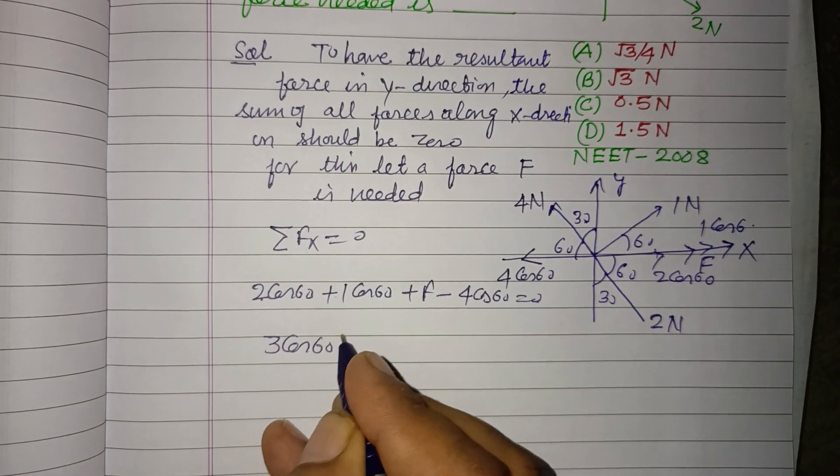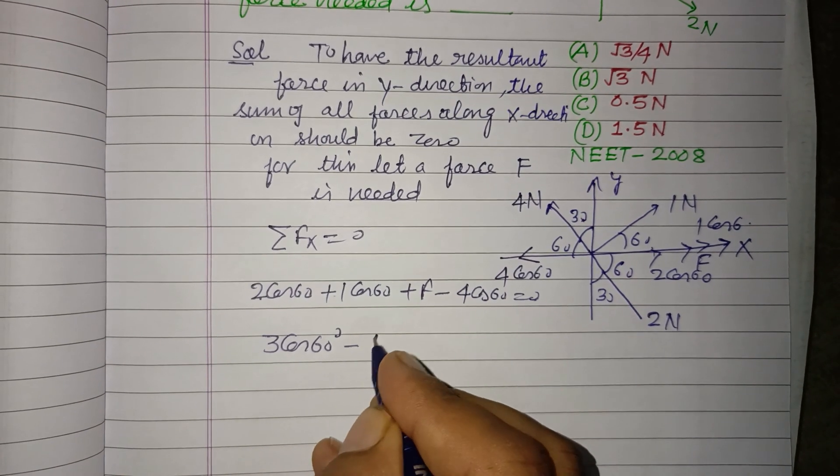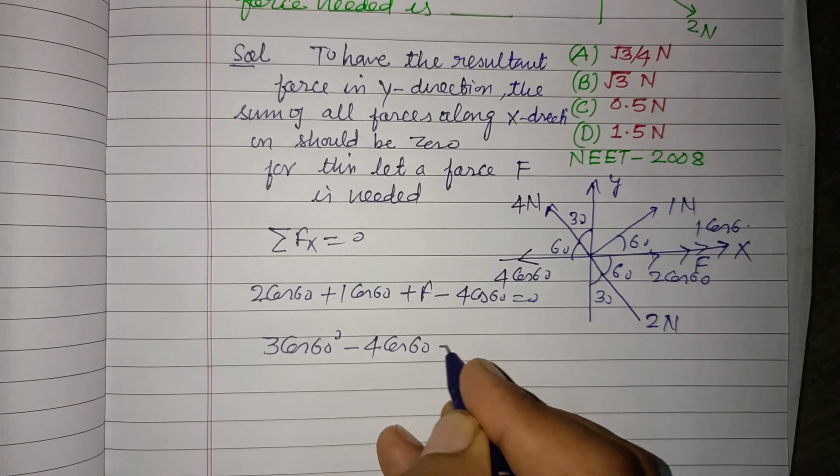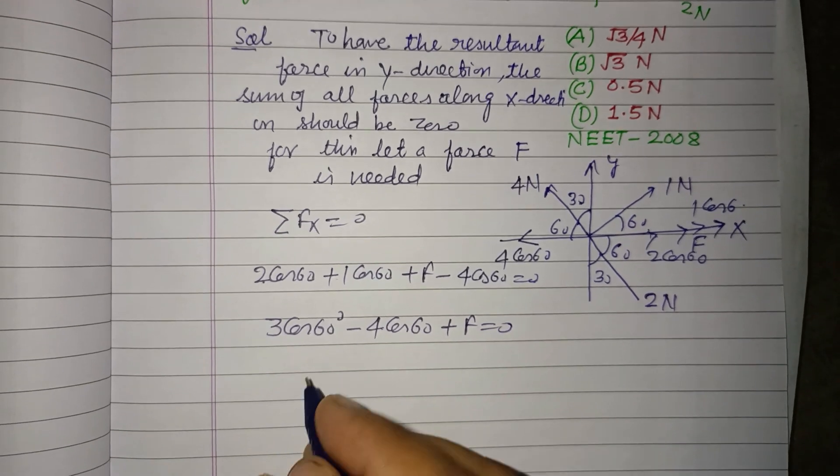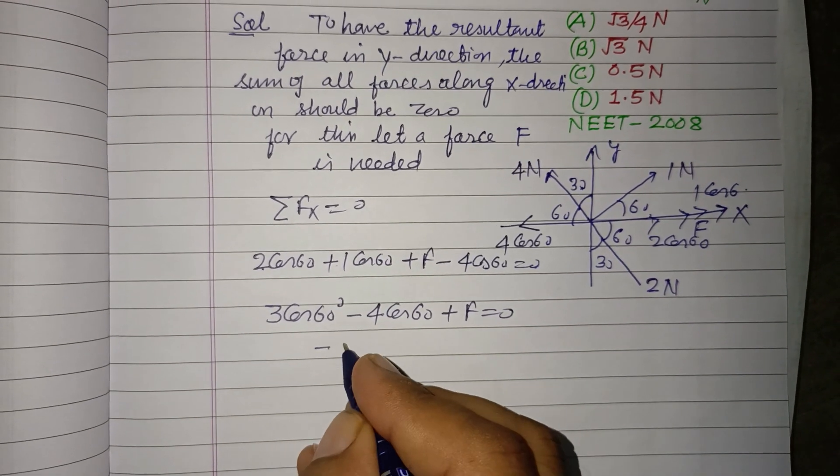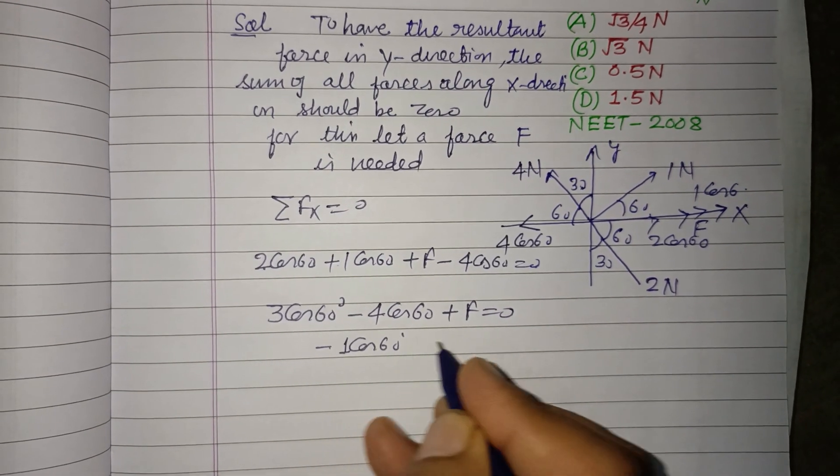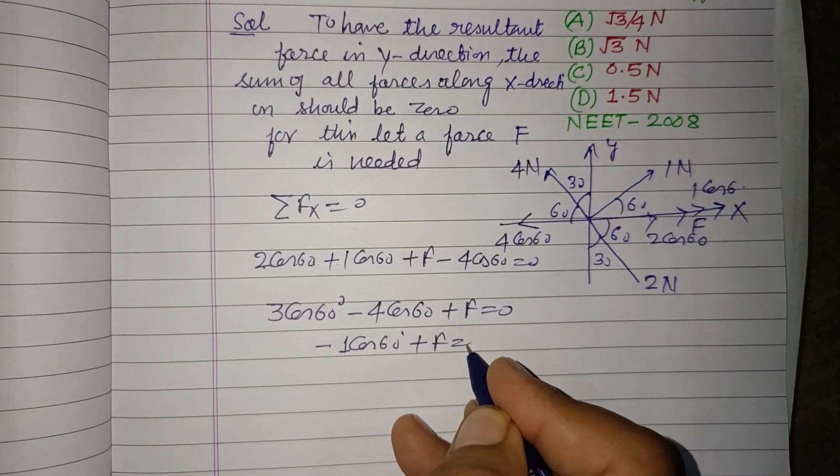This gives -1 cos 60° plus F equal to zero.